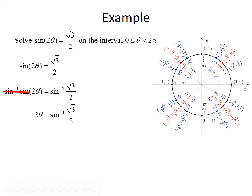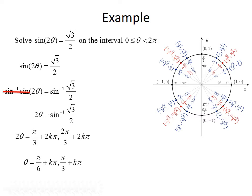We want to find where the y-coordinate, which represents sine, equals root 3 over 2. The first value where y is root 3 over 2 is π/3, and the second is 2π/3. To accommodate revolutions, we write 2θ = π/3 + 2kπ or 2π/3 + 2kπ. Dividing both sides by 2 gives us θ = π/6 + kπ or π/3 + kπ.